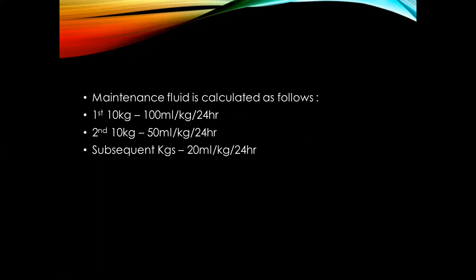So how do we calculate maintenance fluid? For the first 10 kg of the body weight, you multiply it by 100 mls per kg in 24 hours. Then for the second 10 kg, we multiply by 50 mls per kg in 24 hours. Then for the subsequent kgs, you multiply 20 mls by the weight.